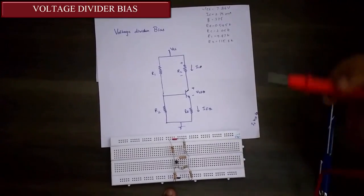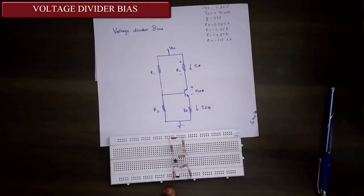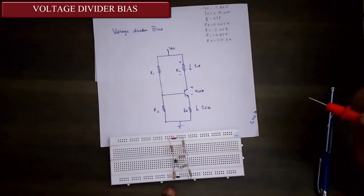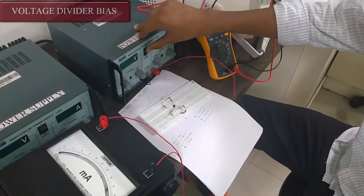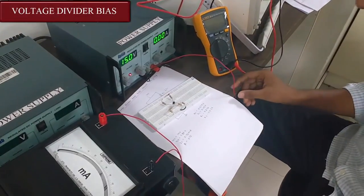And through this now we are going to find the value of IC, VCE, and IE. Here we are giving 15V power supply.